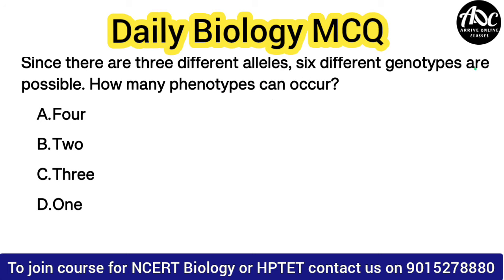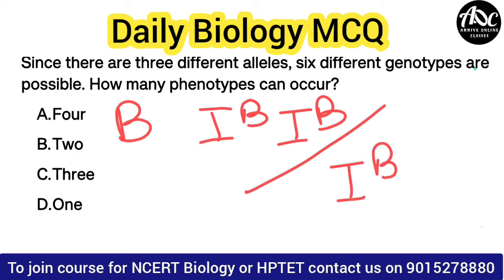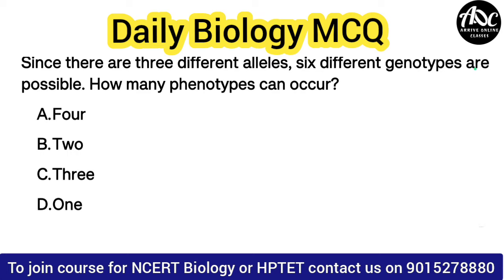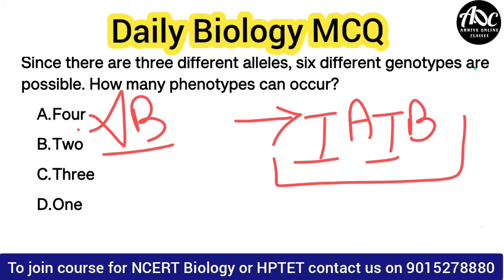Blood group A can exist in a heterozygous condition. Blood group B is exactly the same — it can be in a homozygous condition or in a heterozygous condition. AB blood group is always in a heterozygous condition, and only one form exists.